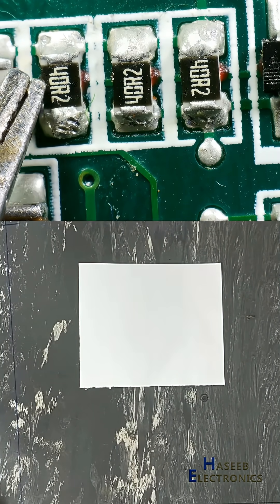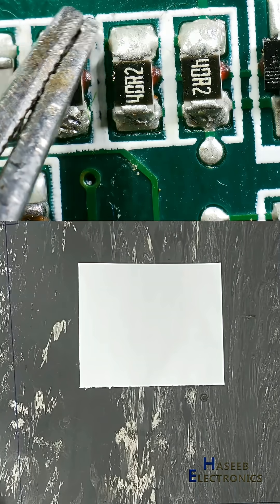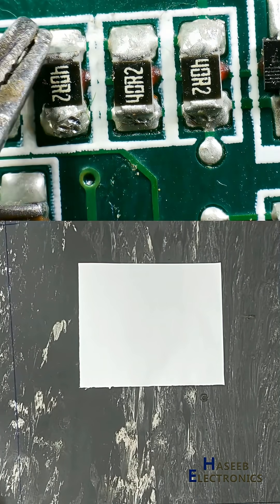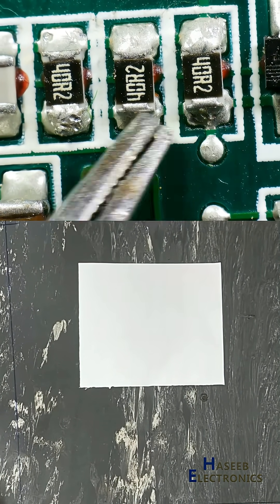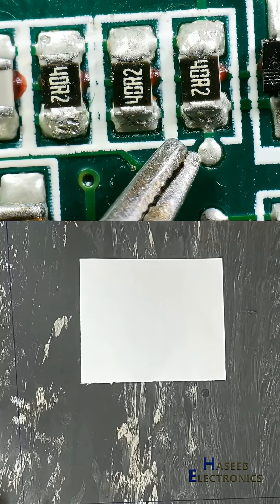We have three resistors 40R2. These sides of the resistors are connected together, and these terminals of the resistors are connected together. All three resistors are in parallel.